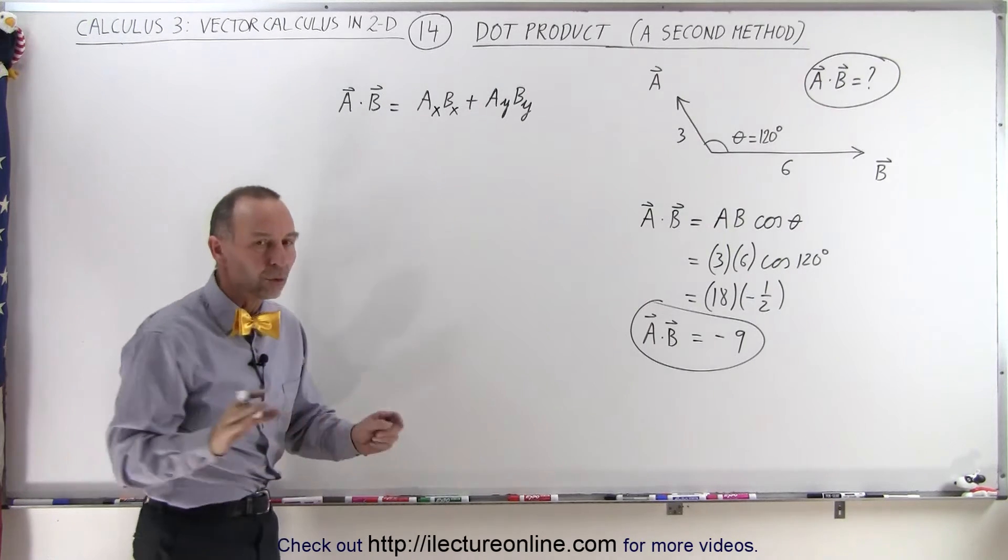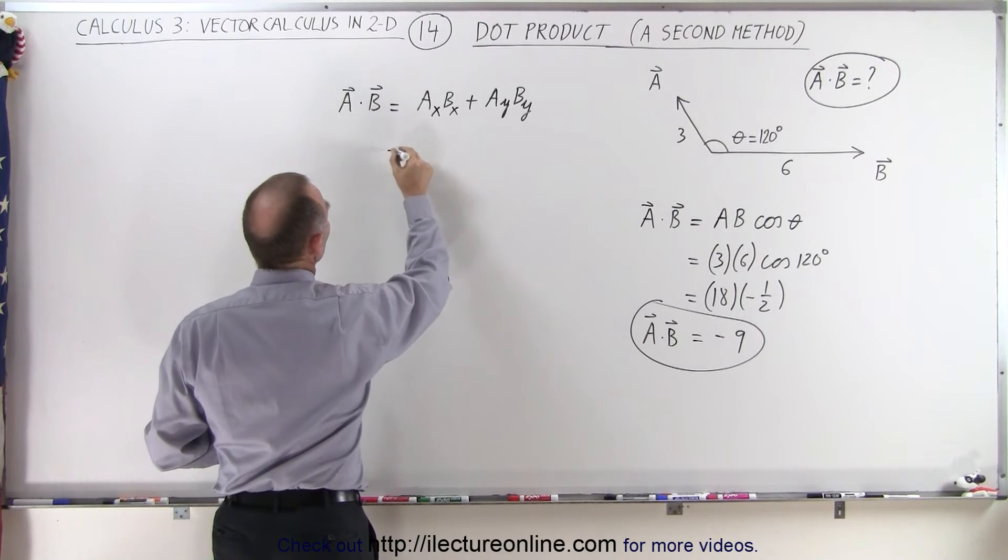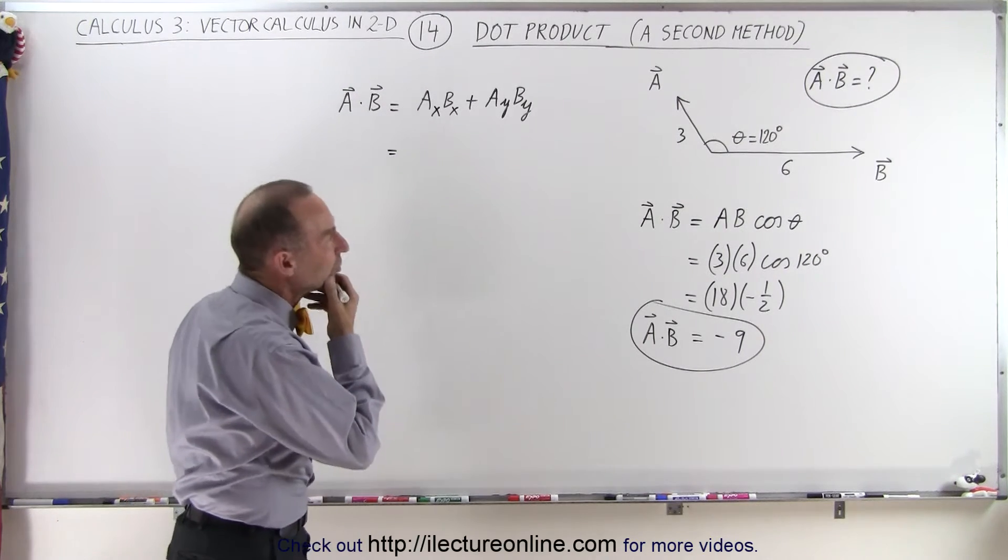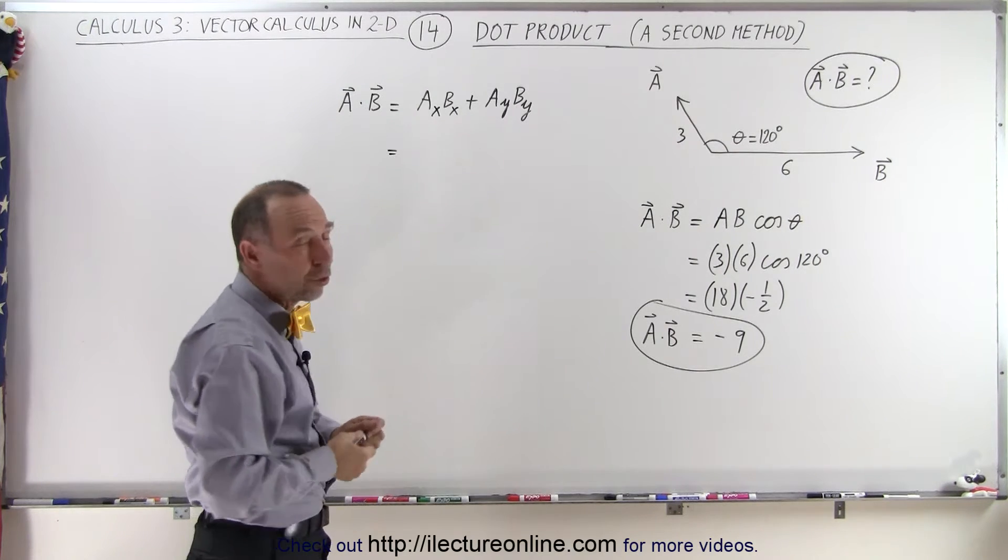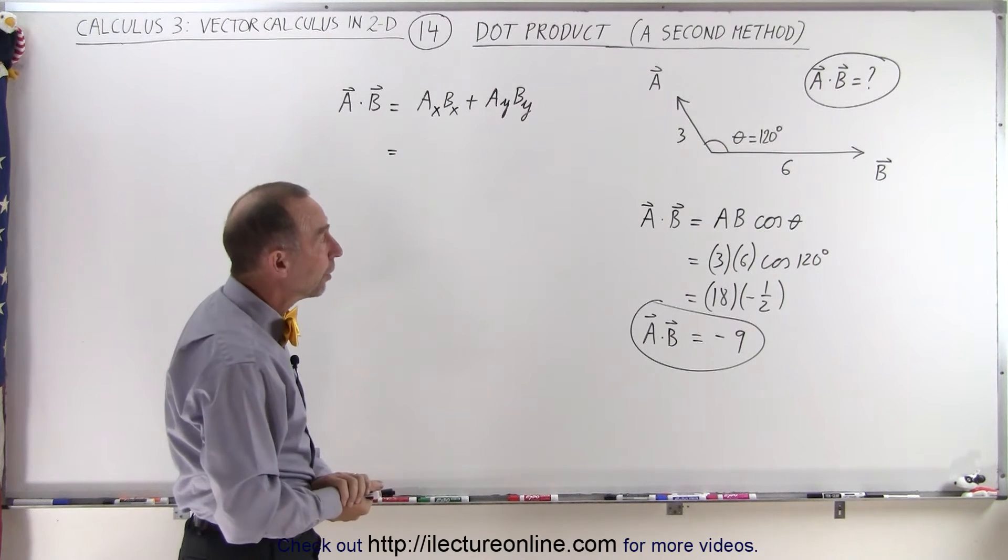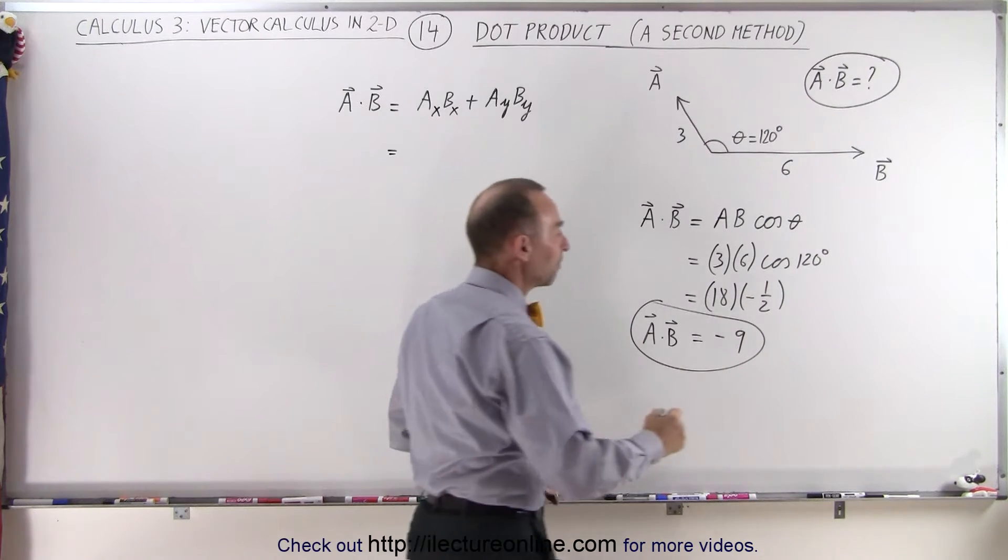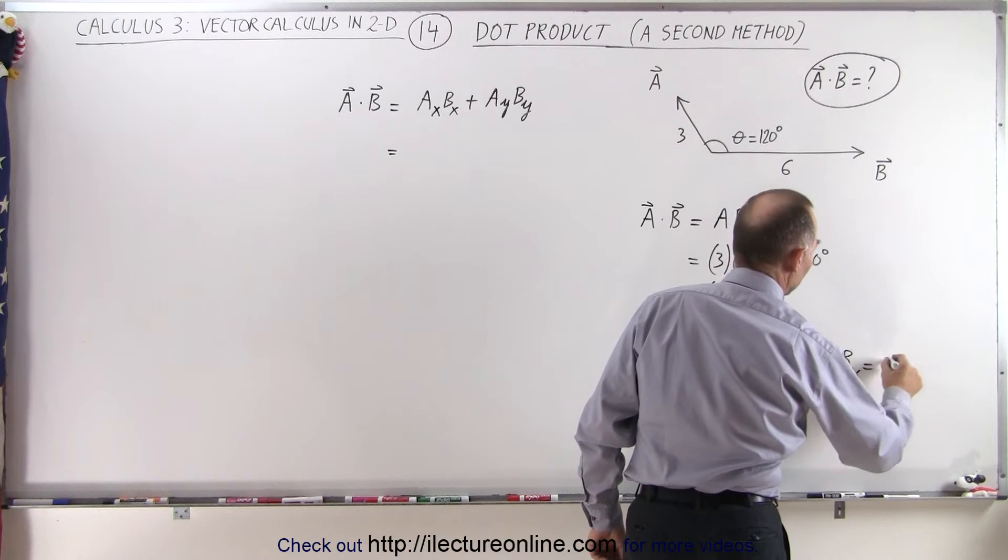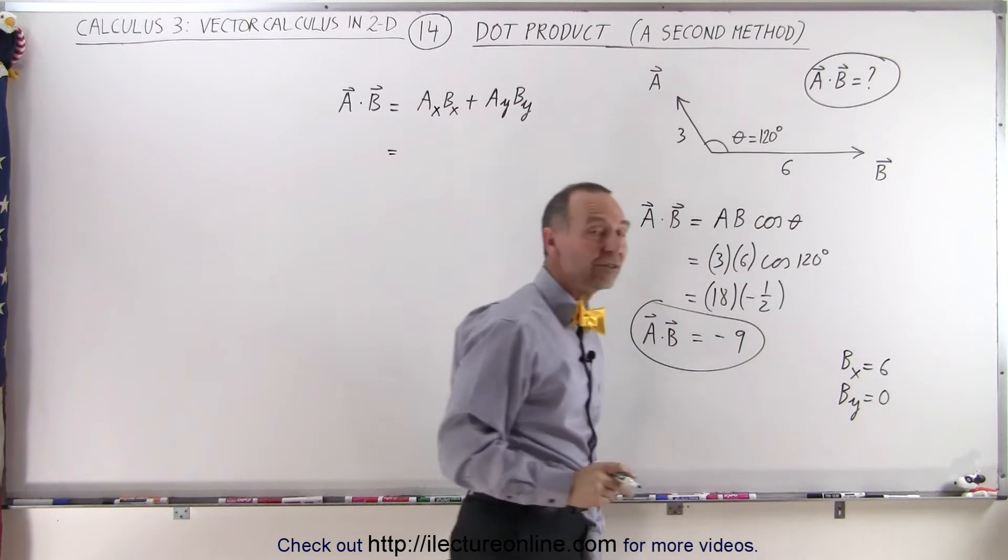But in this case, again, we're only working in two dimensions to make things a little bit easier at first. So if we're going to multiply the components together, for the B vector, that's easy enough because there's only an X component, there's no Y component. But for the A vector, we're going to have to find the components. So we can say that B_x is equal to 6, and B_y is equal to 0. So that's easy enough.